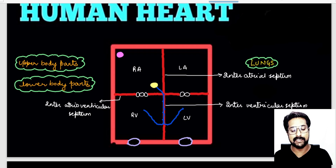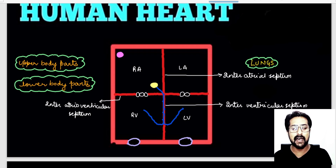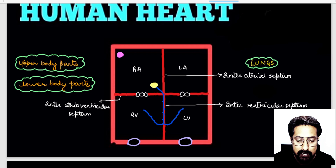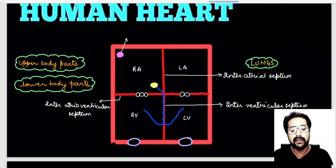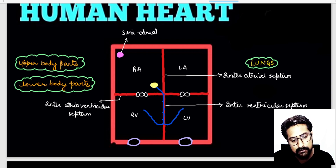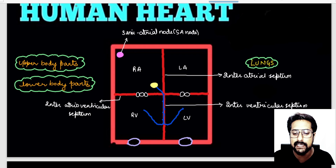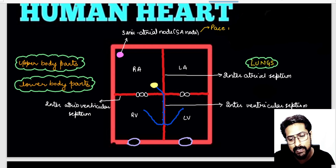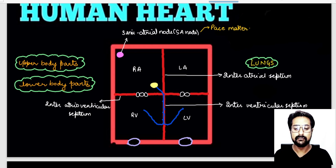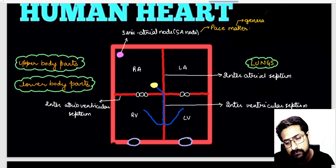The right auricle consists of two nodal tissues: the SA node and the AV node. The SA node is located on the upper left corner of the right auricle — this is the sinoatrial node, or SA node. The SA node is also known as the pacemaker because it generates the heartbeat.